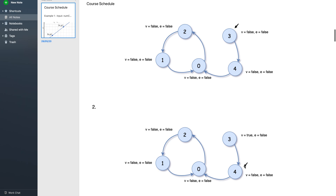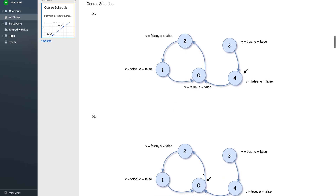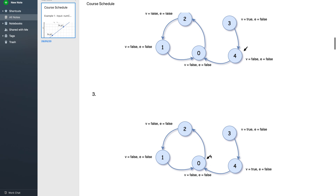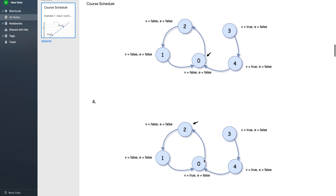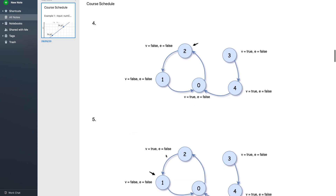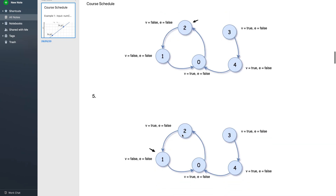Since we're at vertex 3, we mark it as visited and move to its neighbor, vertex 4. We mark vertex 4 as visited and move to its neighbor, vertex 0. From vertex 0 we move to neighbor vertex 2 and mark visited as true for vertex 0. Then from vertex 2 we move to vertex 1, marking visited of vertex 2 as true.